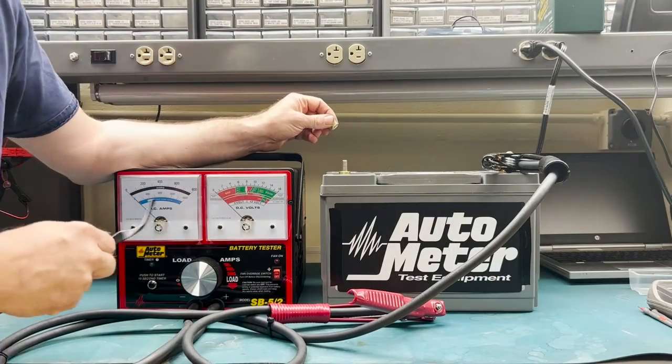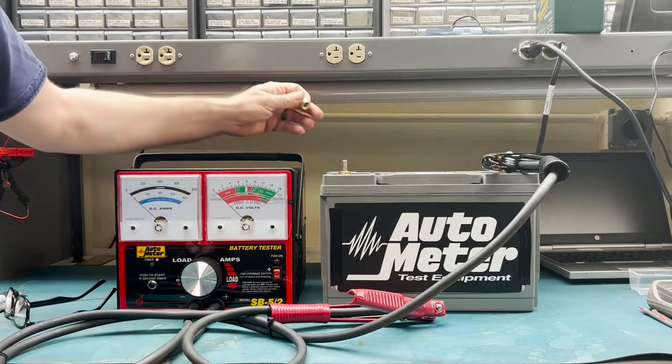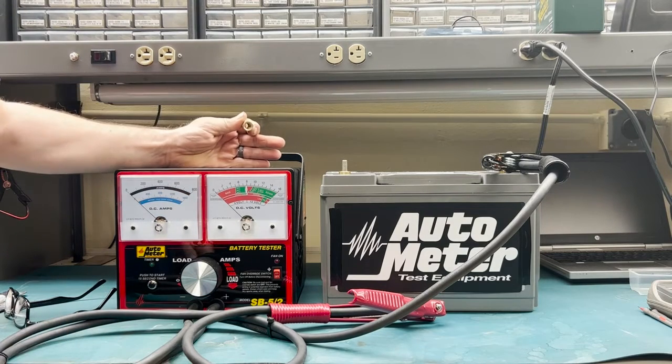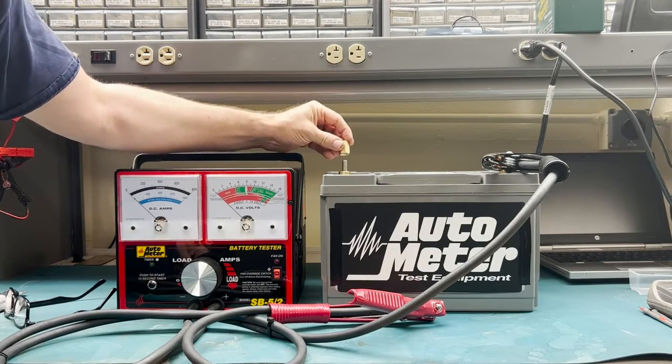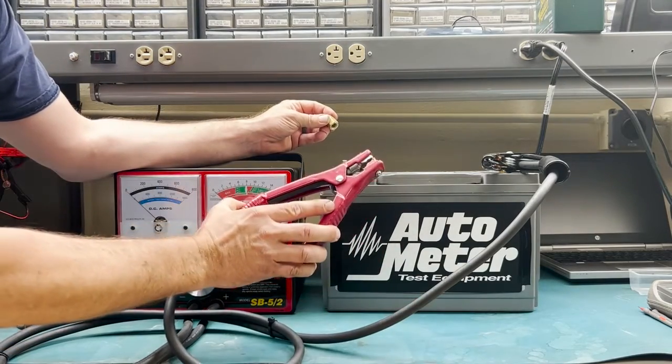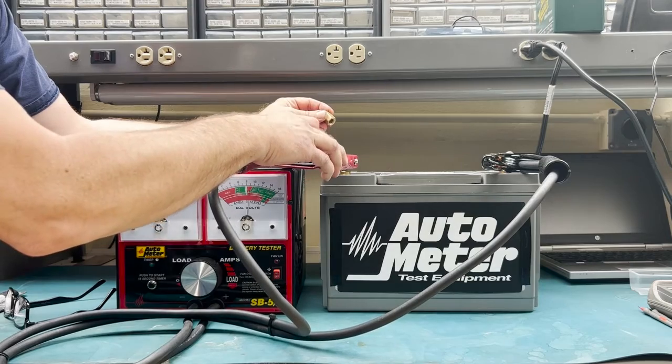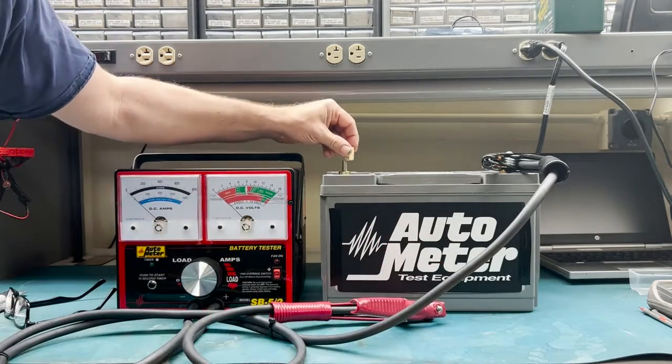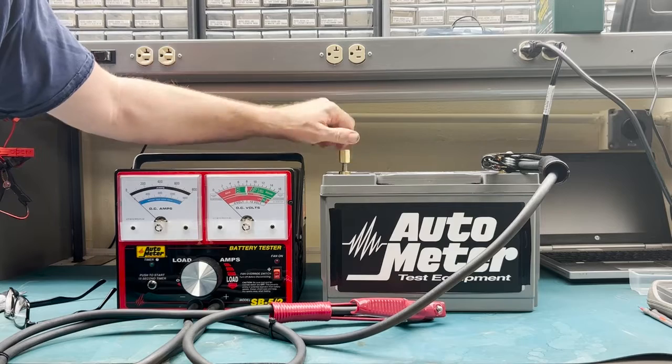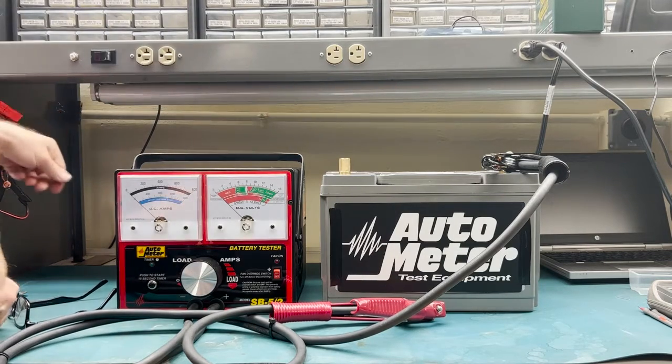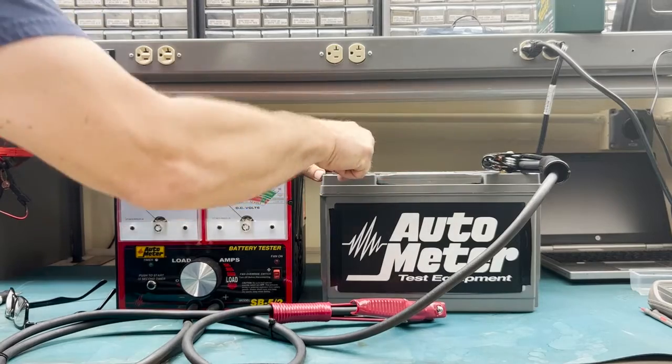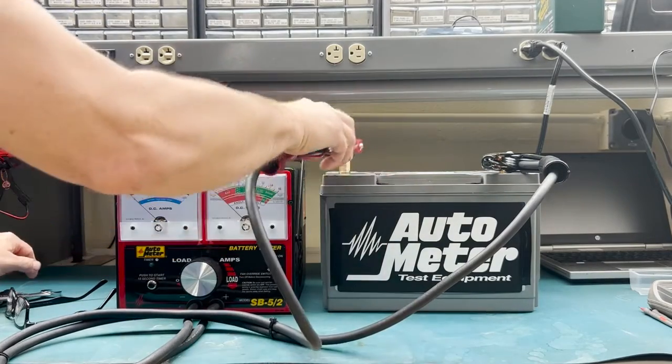Keep in mind that any time you're checking a battery with any kind of tester, such as the Autometer carbon pile tester, you want to make sure you're using the correct adapters. You do not want to connect the clamps directly to the threaded stud; that's not made to carry the load. In this case, Autometer carries specific adapters for you to connect to the battery for proper load testing.